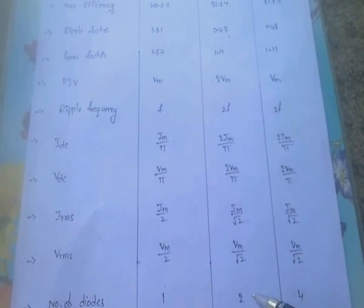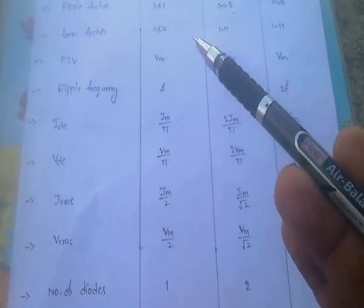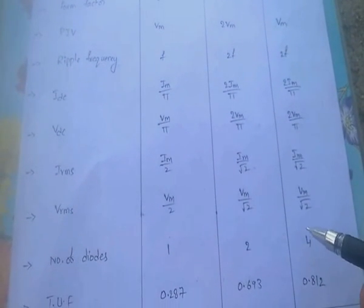The number of diodes used: half wave rectifier uses only 1 diode. Full wave rectifier with center tap uses 2 diodes. Full wave rectifier with bridge type configuration uses 4 diodes. This is a very important question in competitive exams.